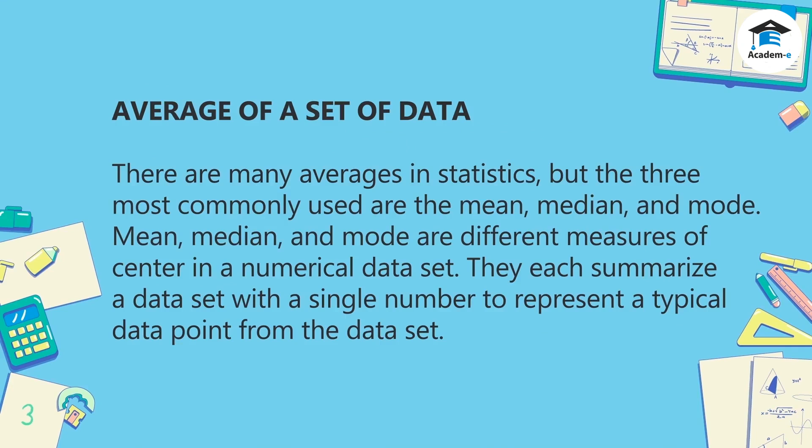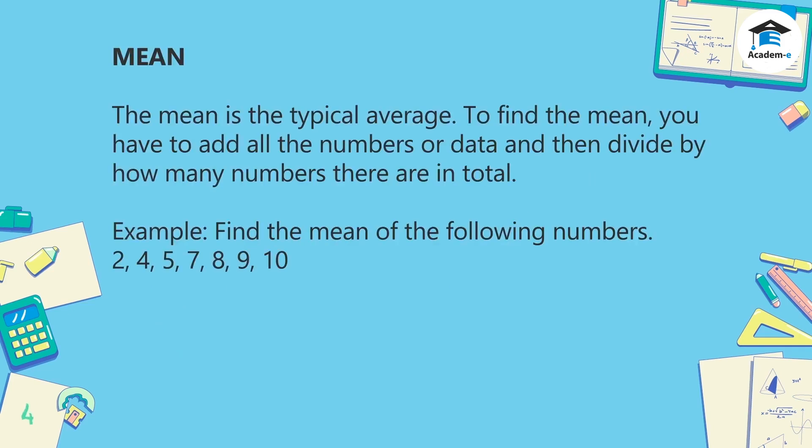There are many averages in statistics, but the three most commonly used are the mean, median, and mode. Mean, median, and mode are different measures of center in a numerical data set. They each summarize a data set with a single number to represent a typical data point from the data set.